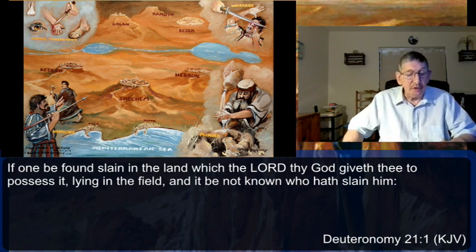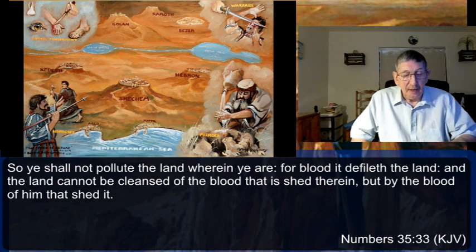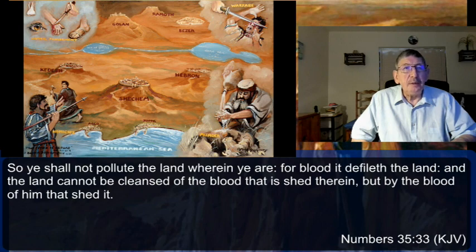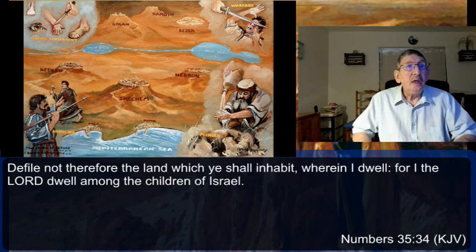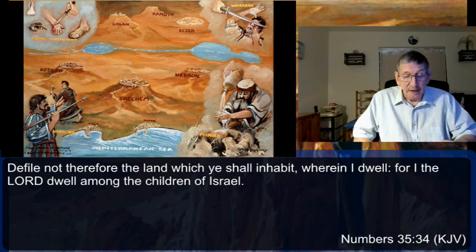This is important based on a principle stated in Numbers 35:33-34: 'So you shall not pollute the land wherein you are, for blood defileth the land, and the land cannot be cleansed of the blood that is shed therein but by the blood of him that shed it. Defile not the land which I the Lord dwell among the children of Israel.' This passage shows that the blood of an unavenged murder defiles and pollutes the land.